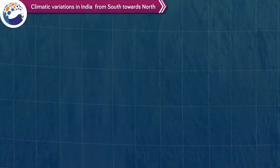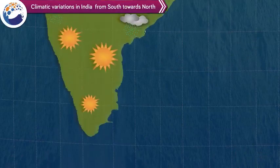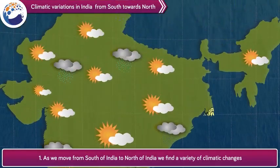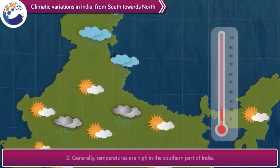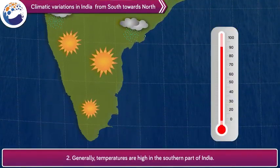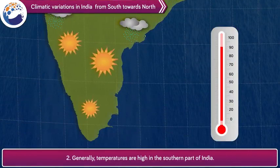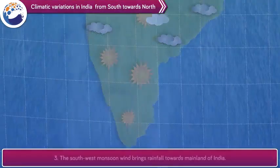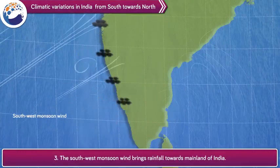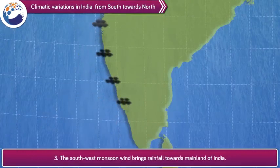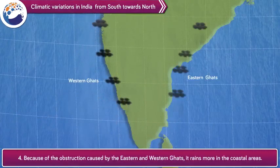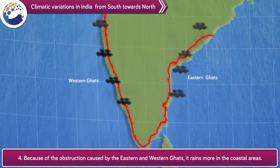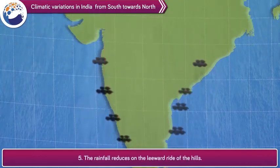Let's look at the climatic variations in India from south towards north. As we move from south India to north India, we find a variety of climatic changes. Generally, temperatures are high in the southern part of India. The southwest monsoon wind brings rainfall towards the mainland of India. Because of the obstruction caused by the Eastern and Western Ghats, it rains more in the coastal areas. The rainfall reduces on the leeward side of the hills.